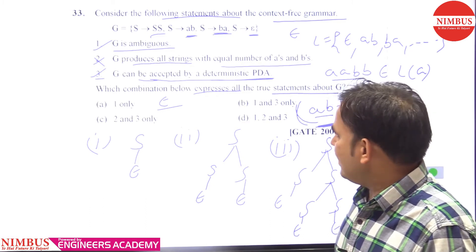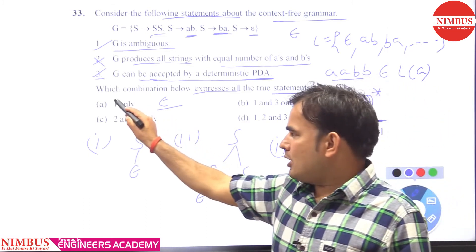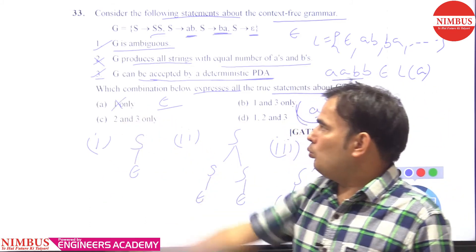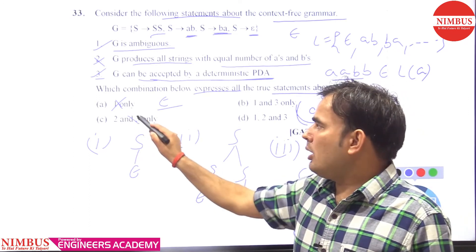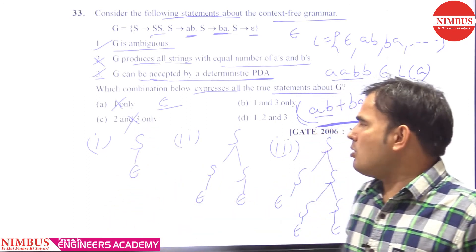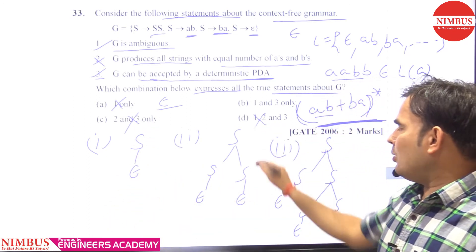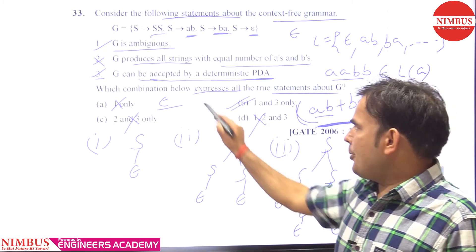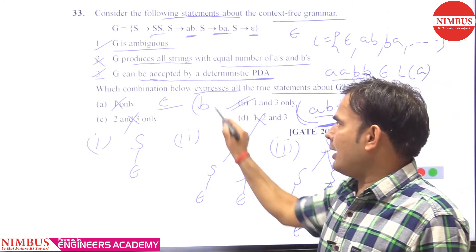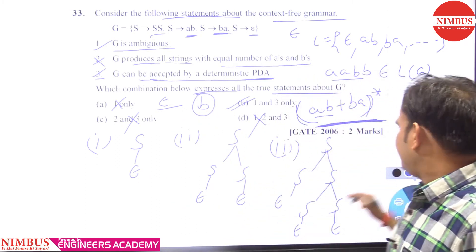So which combination expresses all the true statements? First and third — that is option B — is correct. First only: no. Second and third: no, second is wrong. Option B, first and third, is correct.